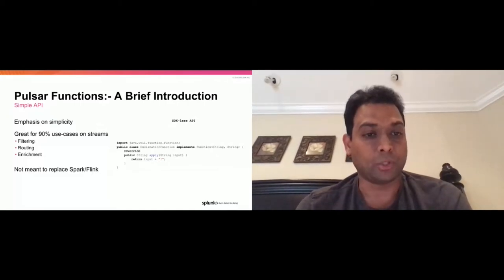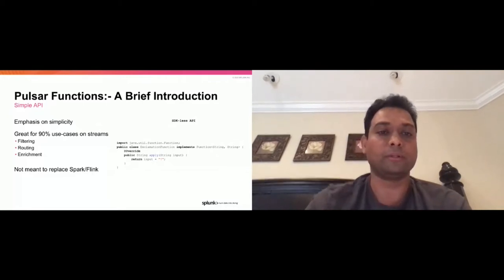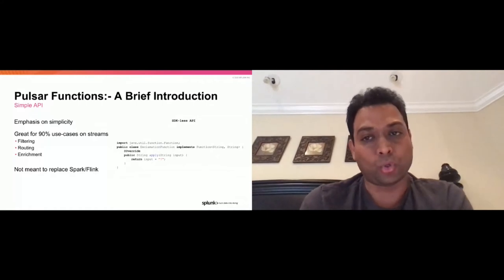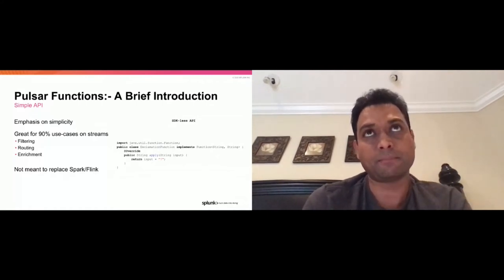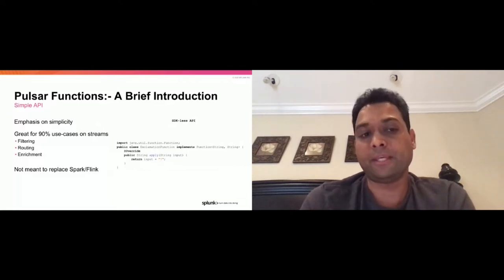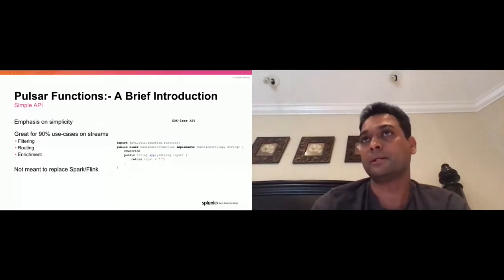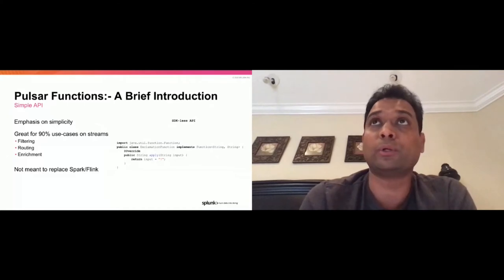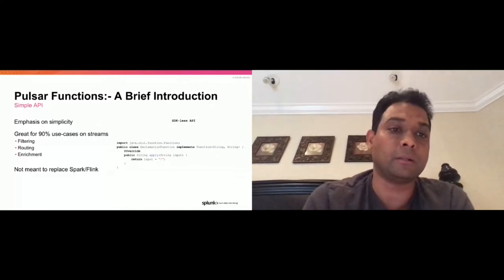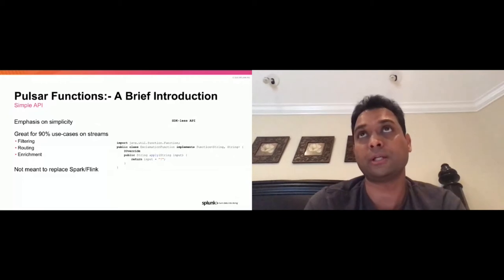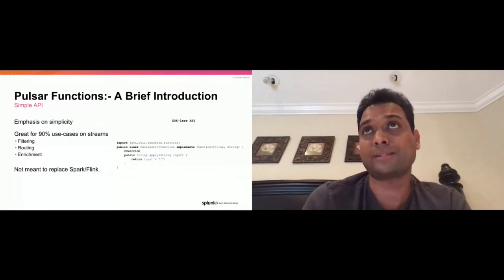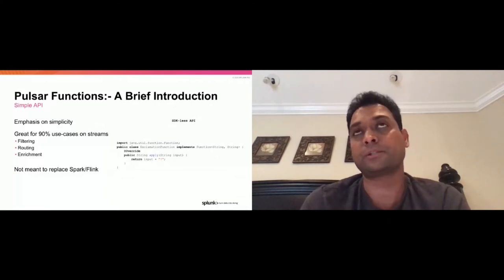Let's lead into the Pulsar Functions lifecycle. At its core, functions are managed by something called workers. These workers expose a CRUD-based REST API. Just like topics in Pulsar, functions are also resources — you can create, update, delete, and view a function. The workers also provide a window into the function, so you can get stats like how many tuples a function has executed, how many functions are on a particular namespace — the usual admin-related work.